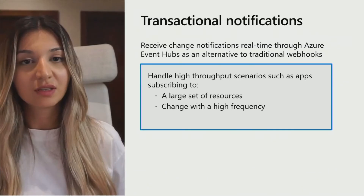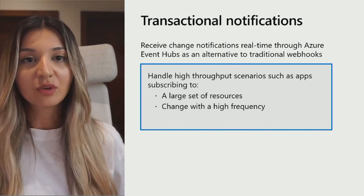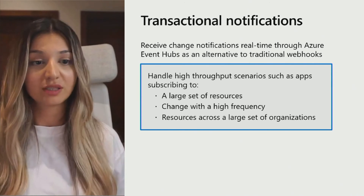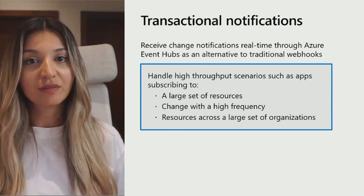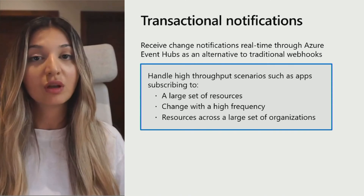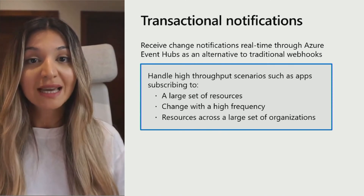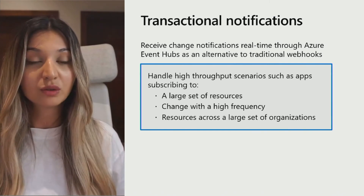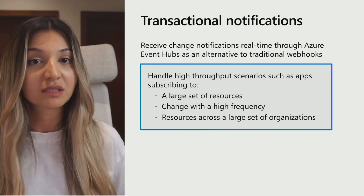How do I get started with this? With Azure Event Hubs, we can handle scenarios where applications subscribing to a large set of resources, also applications subscribing to resources with high-frequency changes. At the same time, we can handle multi-tenant applications that subscribe to resources across a large set of organizations. By using Azure Event Hubs to receive change notifications, you will not rely on publicly exposed notification URLs. Azure Event Hubs SDK will transfer the notifications to your application. Also, you will not need to reply to notification URL validation — you can just ignore the validation message.